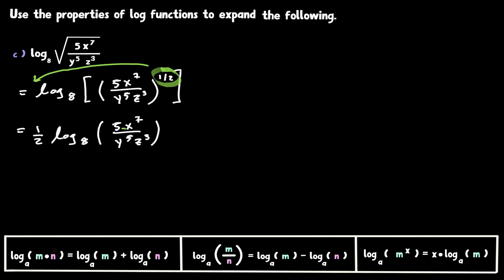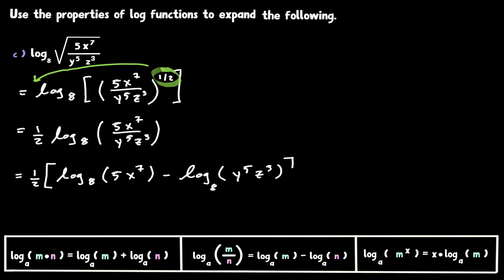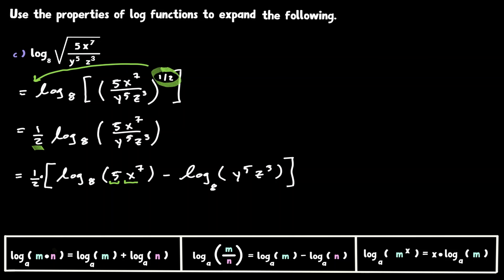Now let's look at what is left inside the log. There is a division and also two multiplications. Let's apply the rule of division first — anytime we are dividing inside the log, we can have the log of the numerator minus the log of the denominator. This one half was multiplied, so I'm going to keep that outside as a multiplication — it is going to multiply the whole expansion. And now within our first log we have a multiplication, which we can expand as an addition. The same goes with the second log. In our first expression we are multiplying five times x to the seven, so let's expand that as an addition.